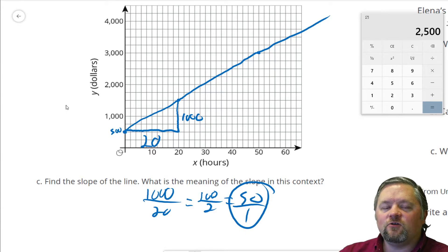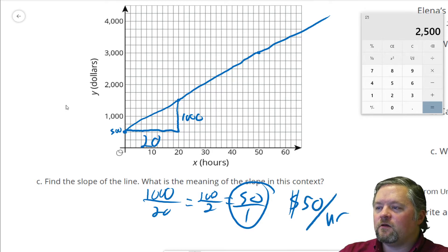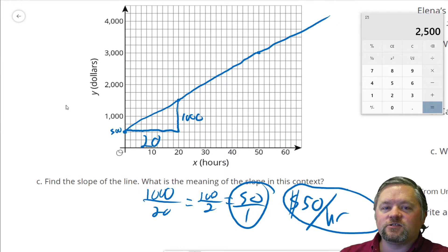What's the meaning of slope in this context? Next, what does the slope mean? Well, we already kind of talked about it. It's $50 per hour. Means they charge $50 an hour to paint.